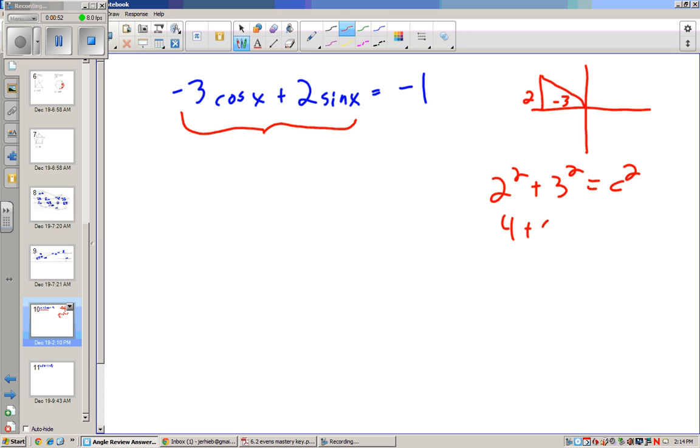that's going to be 4 plus 9 or 13. And so the square root of 13 is going to be that hypotenuse, which is going to be our new amplitude for cosine.